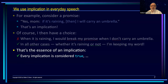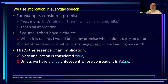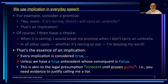Every implication by default is considered true unless you have a true antecedent — the left operand — and a false consequent — the right operand. This is very similar to what we find in the legal profession under the presumption of being innocent until proven guilty. You need evidence if you're going to call me a liar. If you have evidence that I've lied, that's equivalent to saying the implication is false. If you have no such evidence, whether it's raining or not, then the presumption is that I'm telling the truth — I have kept my promise.